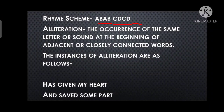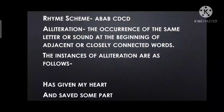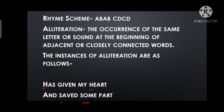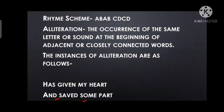So the overall rhyming scheme for this poem is A B A B C D C D. Next literary device is alliteration. Alliteration means repetition of the same letter or sound at the beginning of closely connected words. For example: 'has given my heart' — 'has' and 'heart' both start with 'h,' so that is alliteration. In the second line, 'saved some part' — 'saved' and 'some' both start with 's,' so again alliteration is used.